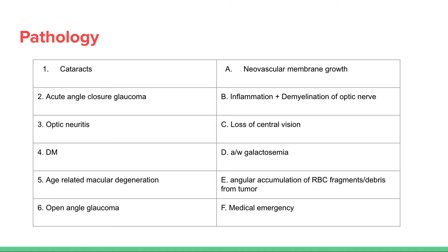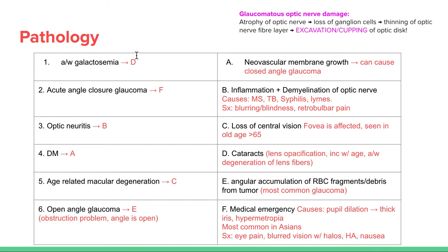Cataracts are associated with galactosemia — go back to biochemistry. We see lens opacification, which increases with age, associated with degeneration of lens fibers, giving a cloudy vision. Number two is acute angle closure glaucoma — this is a medical emergency.